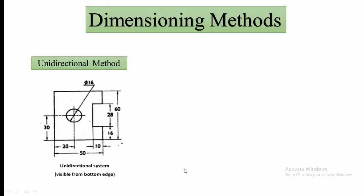Next is the dimensioning methods. There are two types of dimensioning methods. First is unidirectional method. In unidirectional method, all the dimensions should be given from the bottom edge. In this diagram, you find that all the dimensions are placed according to the bottom edge. And these dimensions are written at the middle of the line. This technique is very commonly used in all the cases.